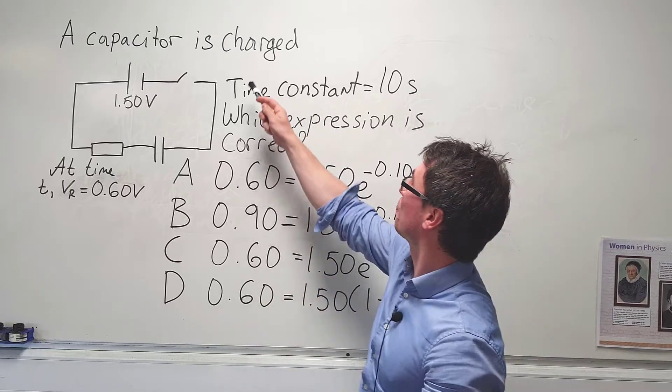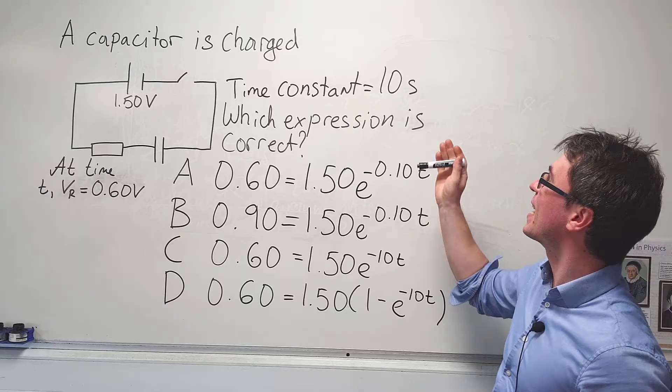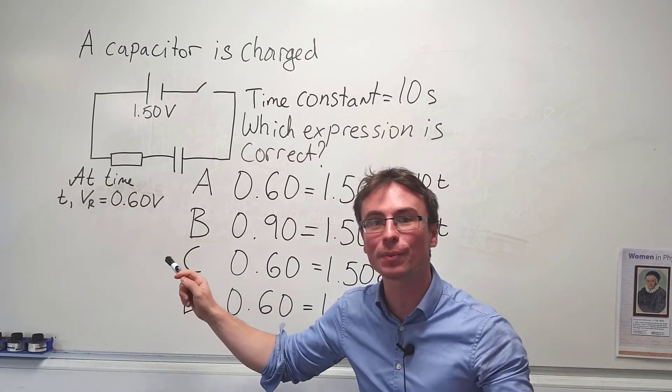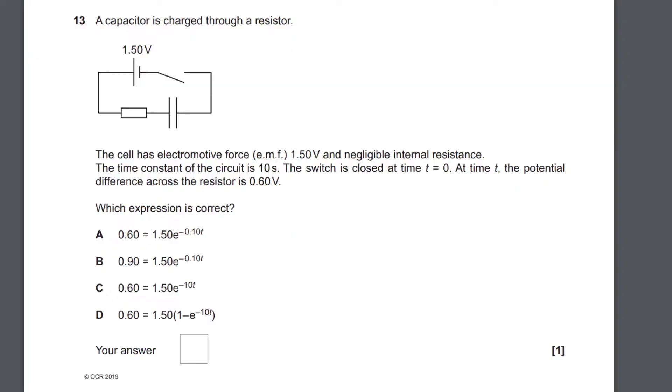We have this capacitor which is being charged up and the time constant of the circuit is 10 seconds. At a time t, the potential difference across the resistor is 0.6 volts. Which one of those expressions is correct? Please choose an answer now.